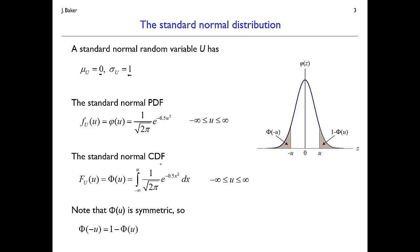The cumulative distribution function for a standard normal random variable is the integral of that PDF from negative infinity up to some value u. There's no analytical solution for this, unfortunately, so we can't just give a closed-form equation for the CDF. We give it the standard notation capital Φ(u). We can also note that this distribution is symmetric about mean 0, so Φ(−u) = 1 − Φ(u), as you can see from the equal areas in the diagram.